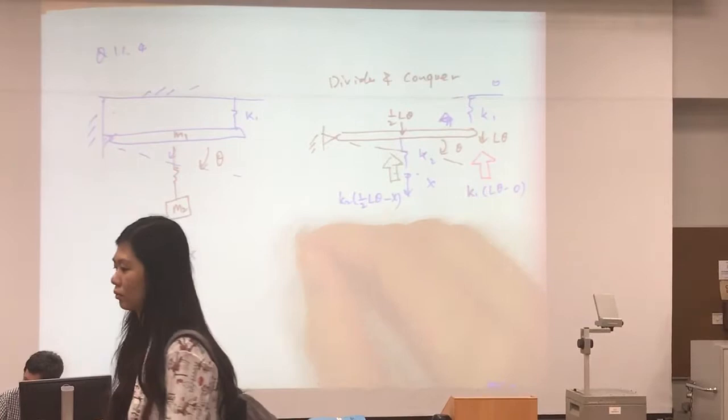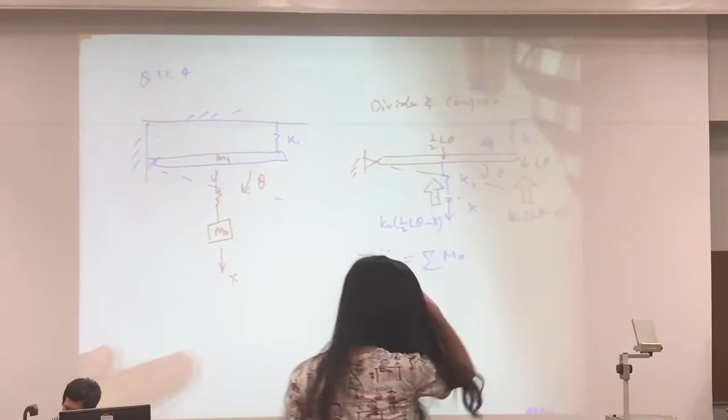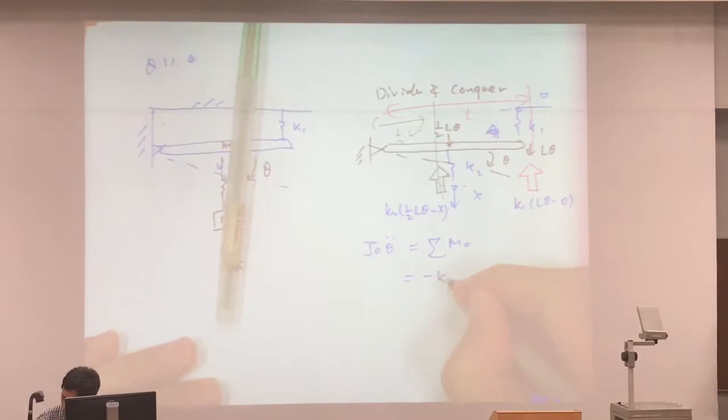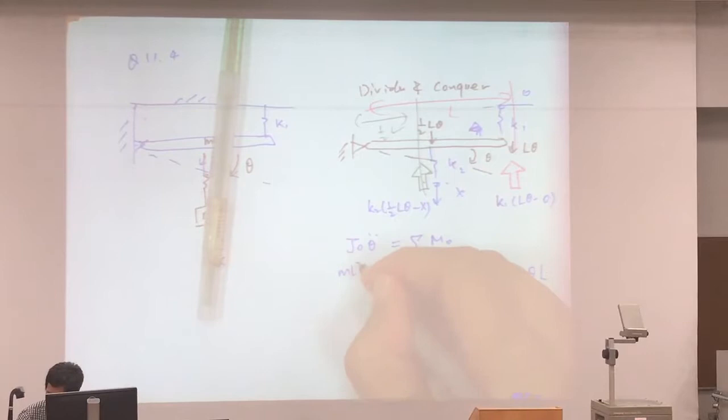So in this way, you've got to do the moment summation to find the Newton's second law. So that moment, the moment arm being half L, the moment arm being L, the moment arm being half L. So in that way, you've got an equation. And this is L squared over spring.